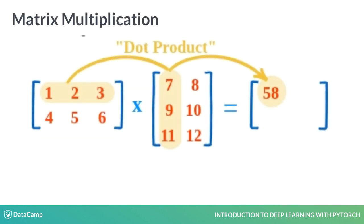Matrices are very important in neural networks. The weights and the values of nets are stored in matrices, and many of the operations are done in terms of matrix multiplication. We quickly review how to multiply two matrices. In order to get the first value, 58, we multiply the first row of the first matrix with the first column of the second matrix, adding each value at the end. Similarly, you do the same for the other entries.